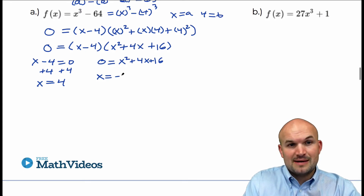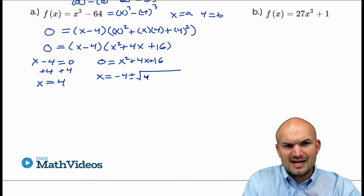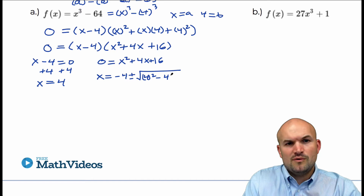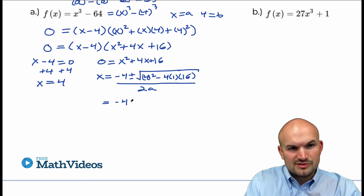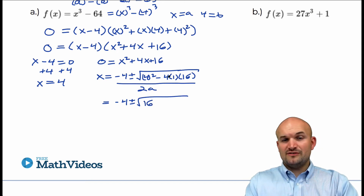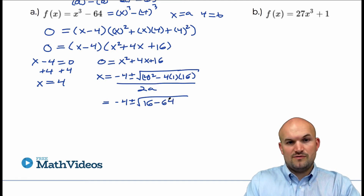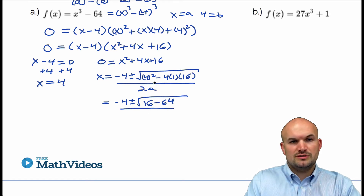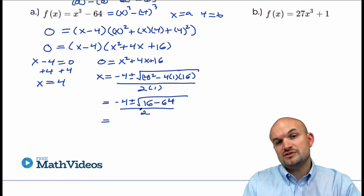So we're going back to using the quadratic formula: opposite of b, plus or minus the square root of b squared minus 4ac, all over 2a. So let's plug in: negative 4, plus or minus the square root of 16 minus 4 times 1 times 16, all over 2 times 1. That gives us 16 minus 64, which equals negative 48, all over 2. So we have negative 4 plus or minus the square root of negative 48, all over 2.